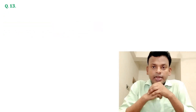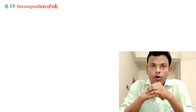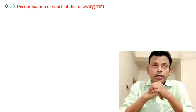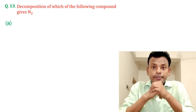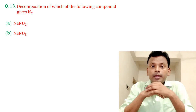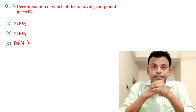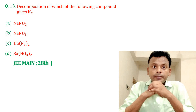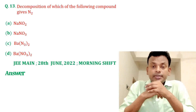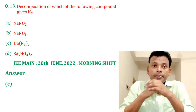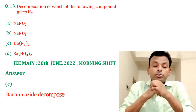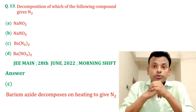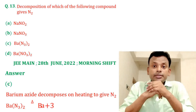Question number thirteen: decomposition of which of the following compound gives nitrogen? Options A, B, C, and D are given. Answer: option C is correct. Barium azide decomposes on heating to give N2, that is nitrogen.